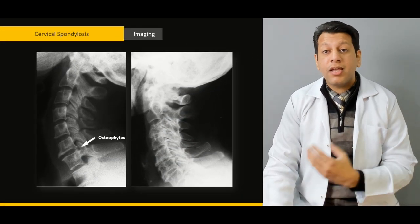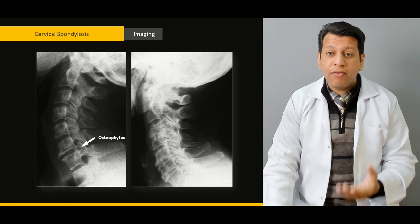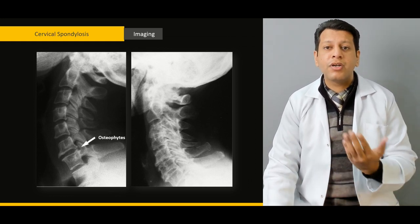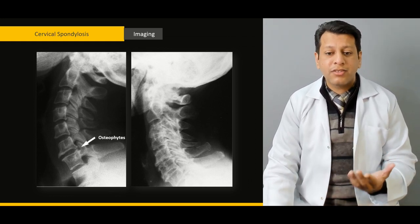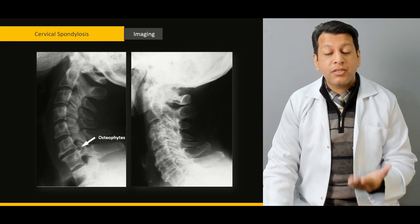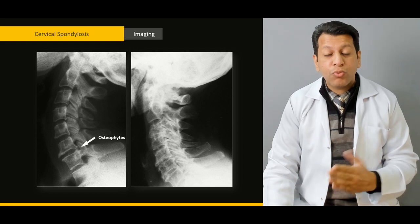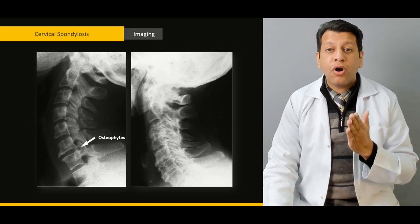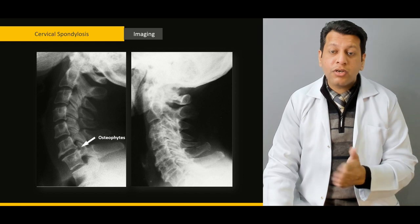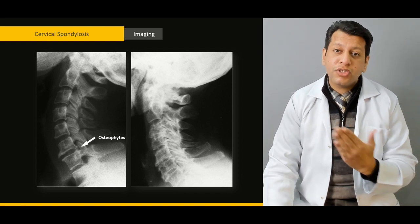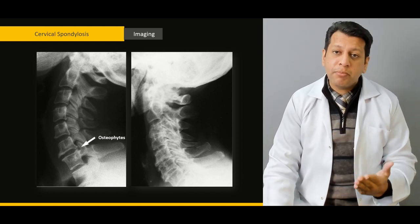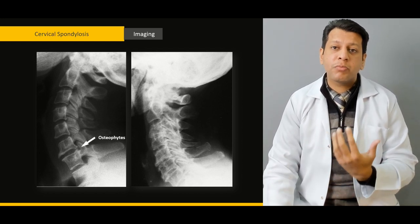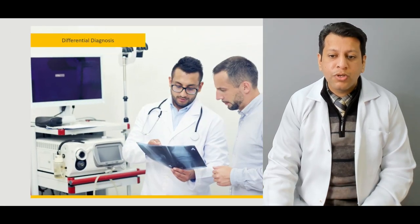Then, as with any disease, once you've done the history and examination, you have to go for x-rays. We'll be discussing in detail what to look for on x-rays, how to interpret them, and what are the different changes which actually happen when viewing a cervical spine x-ray in the lateral view.